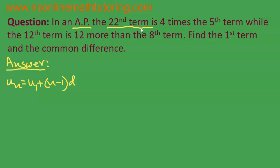Now we are in a position to form the equations. The 22nd term is u22. 'Is 4 times' means 4 multiplied by the 5th term, which is u5. So now we expand — we just put in the expressions for u22 and u5.